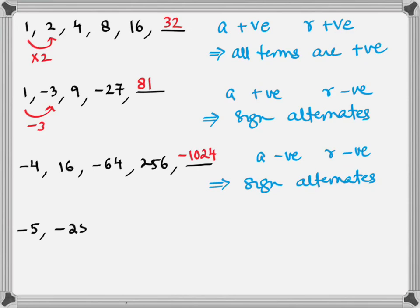The last series on this page: -5, -25, -125, -625. What is the multiplication factor? By looking at the first three series, you might have observed that if the second term is the numerator and the first term is in the denominator, second divided by first gives you the common ratio. For example, in the first series 32 over 16 is 2, and in the second series 81 over -27 is -3. This rule applies generally — any higher term divided by the term before it, if that gives a constant value, the series is a geometric progression. In the last series, -25 over -5 is +5.